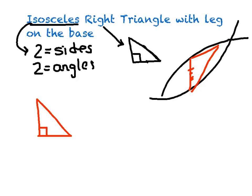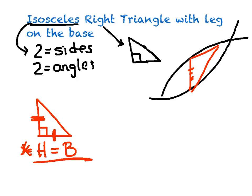Here's my right. My isosceles implies that it has two equal legs, so go ahead and mark the two legs equal. And if you do that, it's almost impossible to screw up. What do you know about the base and the height in an isosceles right triangle with leg on the base? Well, clearly, if you drew the picture and marked it, you would say that they are equal to each other.